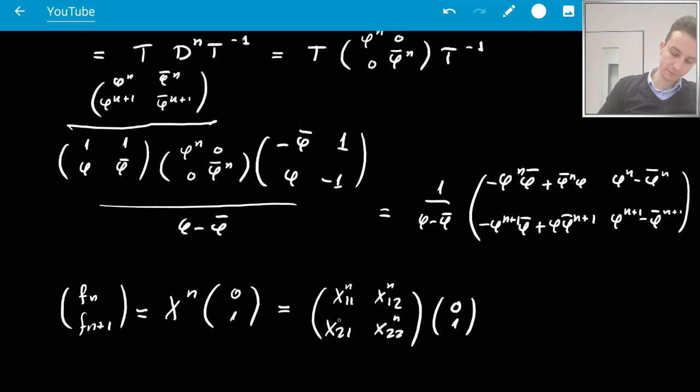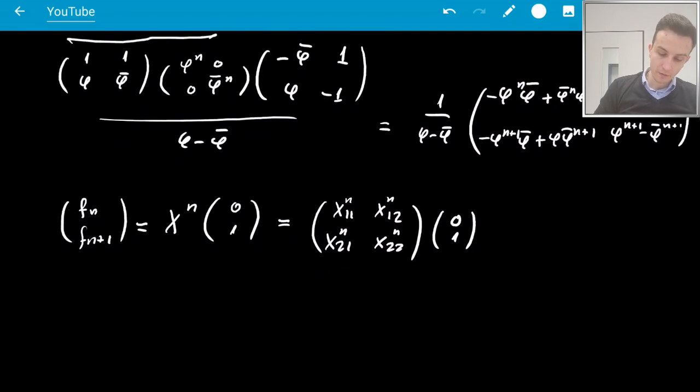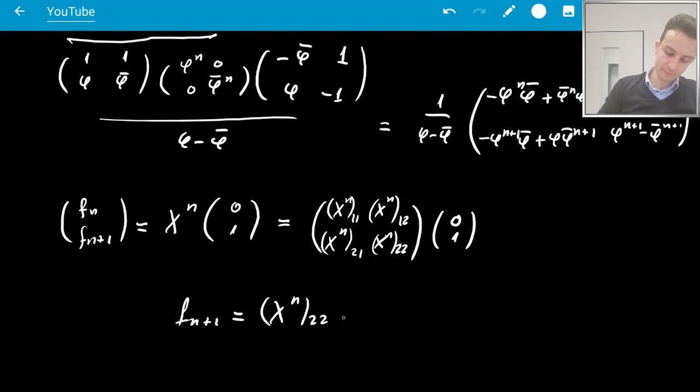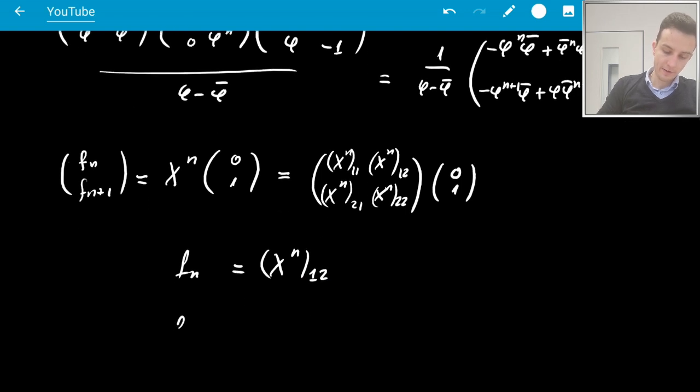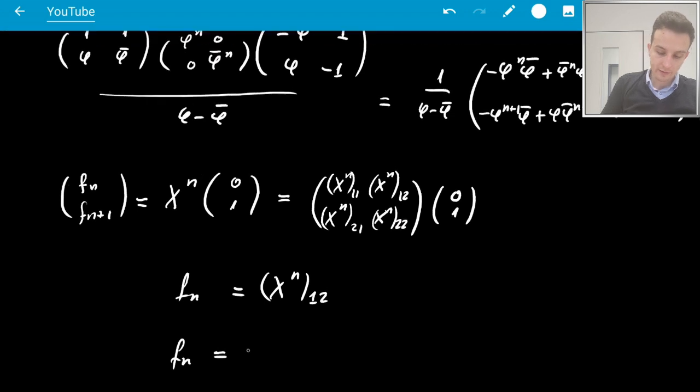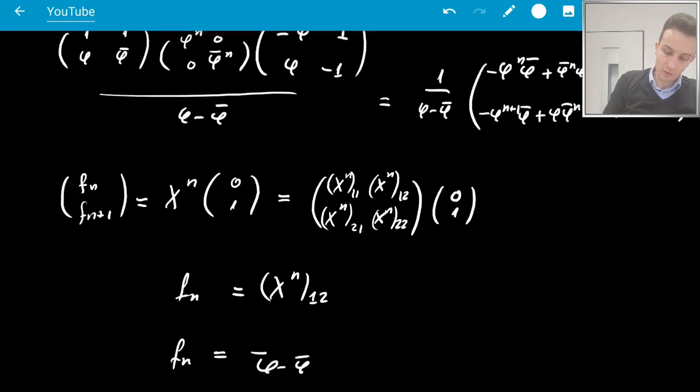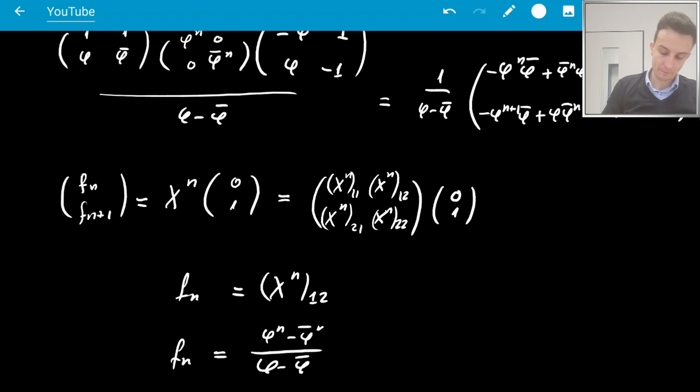Okay, I'll write n. But you understand how the powers work here. Maybe like this. Okay, so this means that fn plus 1 is just xn,2,2. Or, well, fn is just xn,1,2. Maybe better. This means that fn is, so we just read it off. It's phi to the n minus phi bar to the n over phi minus phi bar. That's it.